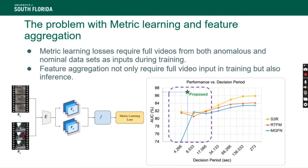The way we overcome this is by fixing a decision period. We take an input video of just 6.4 seconds, and looking at only that 6.4-second window, the model should determine if there is an anomaly present in that time period.